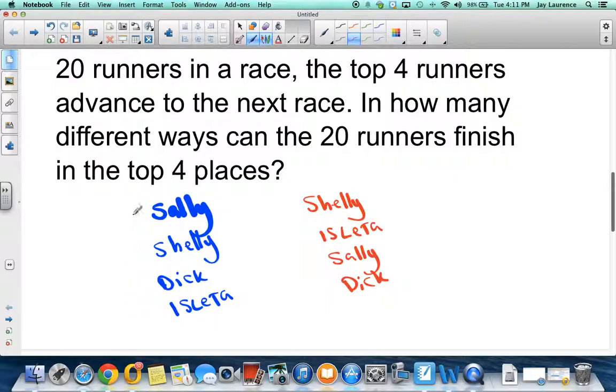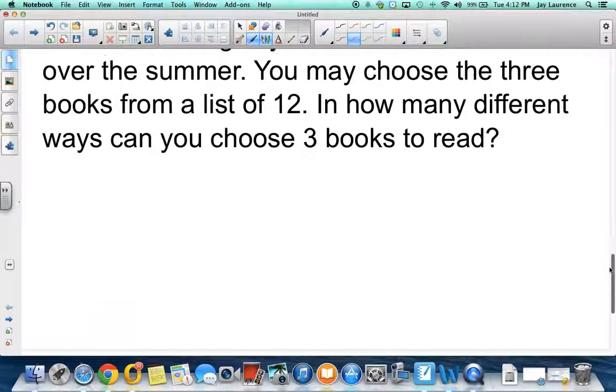Well, let's see who goes on to the next race over here. Shelly, Sally, Dick, and Aelita. Who goes over here? Shelly, Aelita, Sally, Dick. It's the same four runners. This is a combination, a combination. This is a combination. Why? Because the order does not matter.